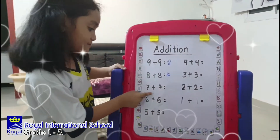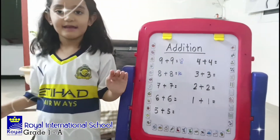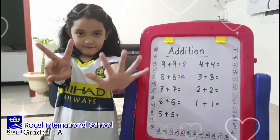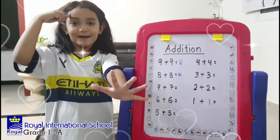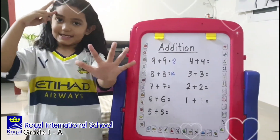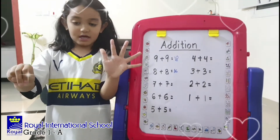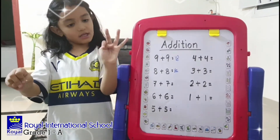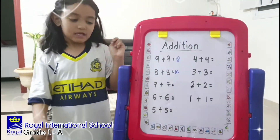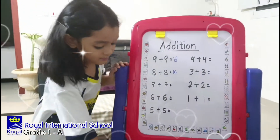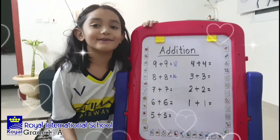7 plus 7. I have 7 in my fingers and 7 in my mind. After 7: 8, 9, 10, 11, 12, 13, 14. How to write 14? 1, 4.